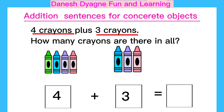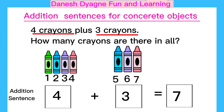Now let's count the total number of things. One, two, three, four, five, six, seven. The total number of crayons are seven. So the addition sentence is four plus three equals seven.